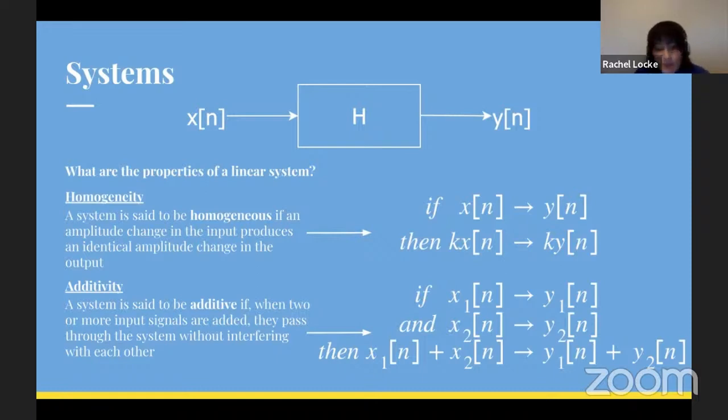So the first property that we need to have for a system to be called linear is homogeneity. A system is said to be homogeneous if an amplitude change in the input produces an identical amplitude change in the output. That is, if an input signal x[n] produces an output y[n], then an input signal scaled by some scaling factor k should produce an output y[n] scaled by an identical factor k.